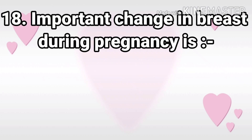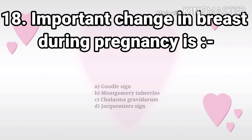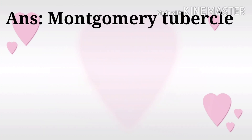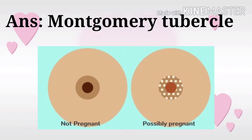Next question: Important changes in breast during pregnancy? The options are Goodell sign, Montgomery tubercles, chloasma gravidarum, and Jacquemin sign. The answer is Montgomery's tubercles — sebaceous glands that appear as small bumps around the dark area of the nipple.